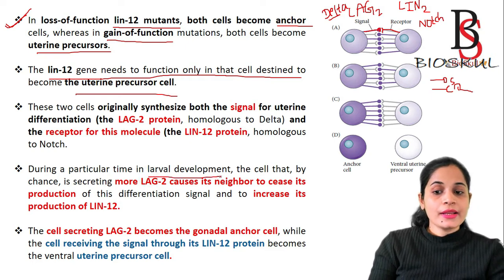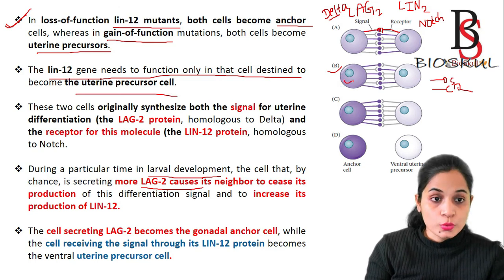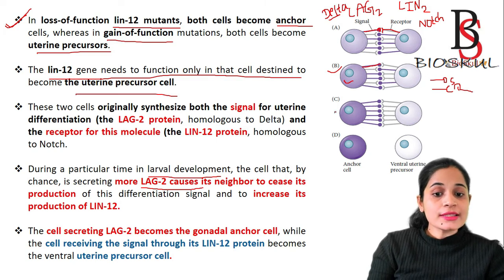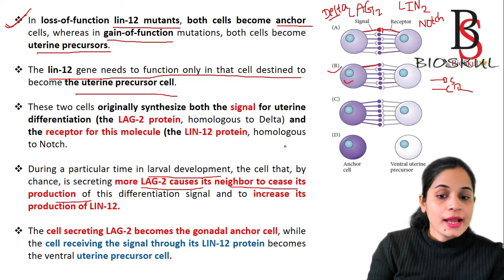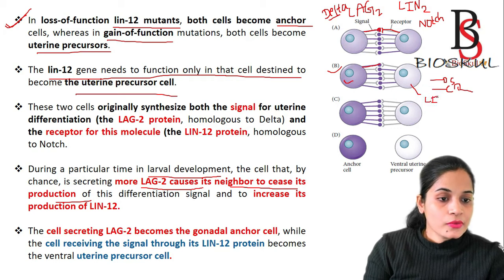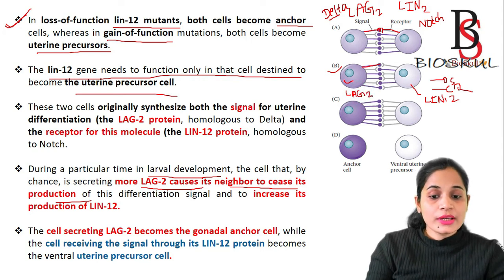During a particular time in larval development, by chance one of the cells secretes more lag-2 signaling molecule. By secreting more lag-2, it causes its neighbor to cease production of lag-2. The neighboring cell then increases its production of lin-12. So one cell produces more lag-2 and the neighboring cell produces more lin-12.